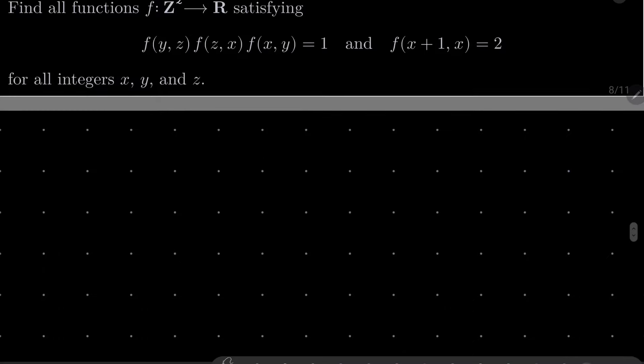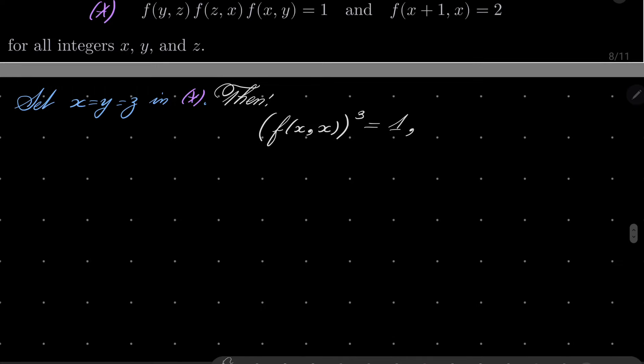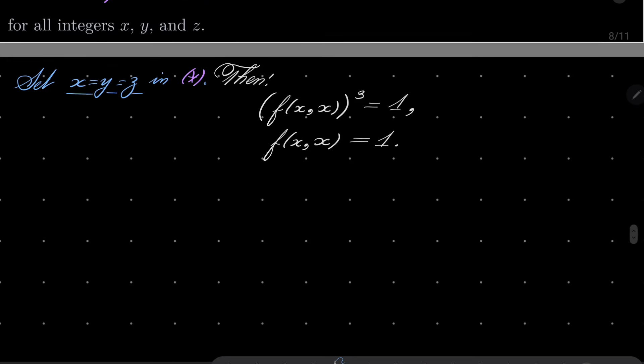Right, so let's start, as I suggested. Let's call our equation asterisk, as I like to do, and let's set x, y and z to be the same in our condition asterisk. Then we have the following. On the left hand side we have f(x,x) three times, so it's cubed, equals 1. And since our function takes real values, the only possibility is that f(x,x) is 1. It would be a different story in the set of complex numbers, but no matter.